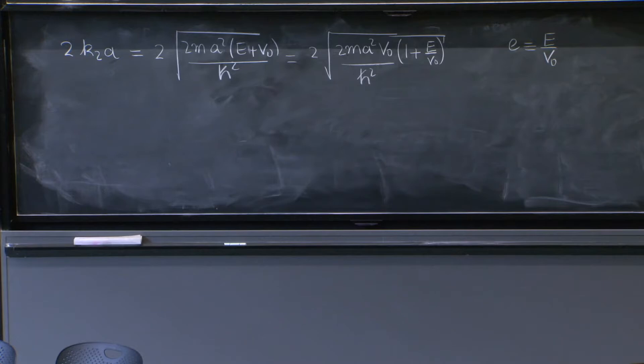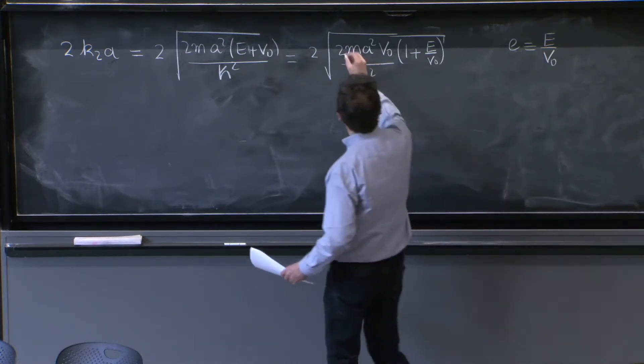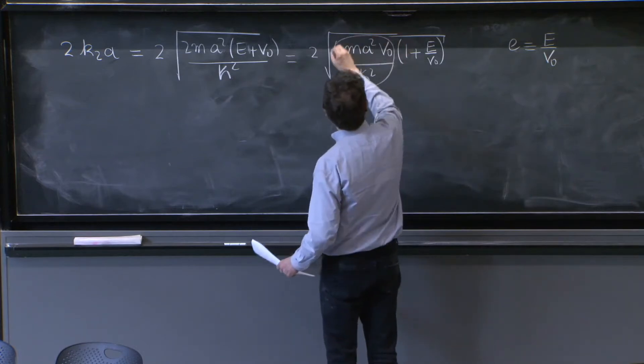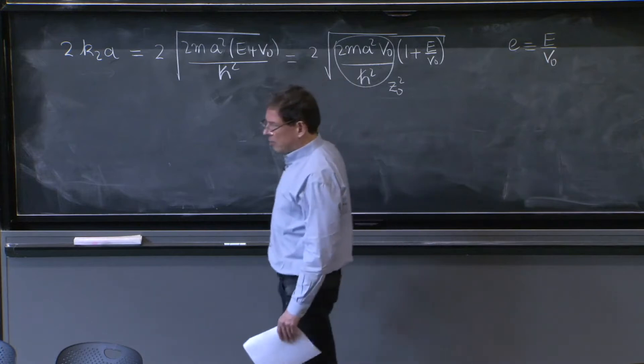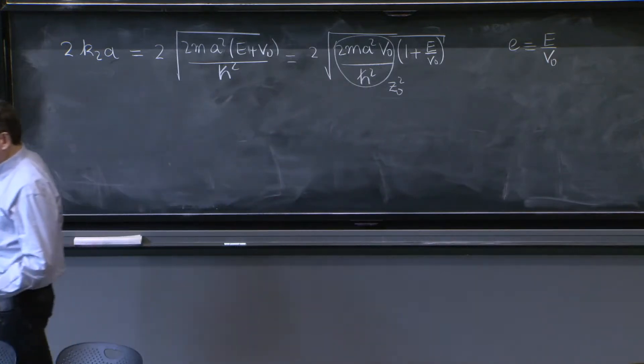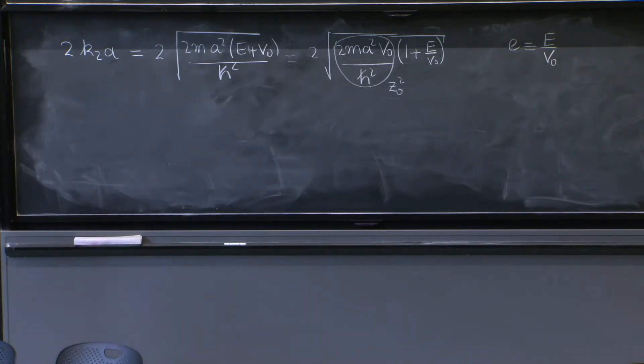So this is nice. You don't have to talk about evs or some quantity, just a pure number. And here there is another number that is famous. This is the number z0 squared of a potential well.